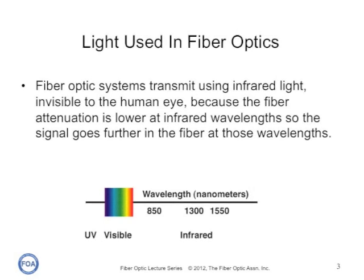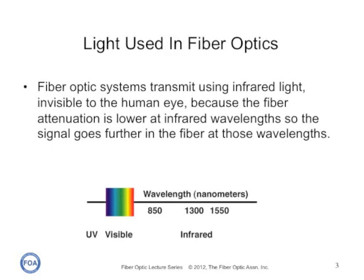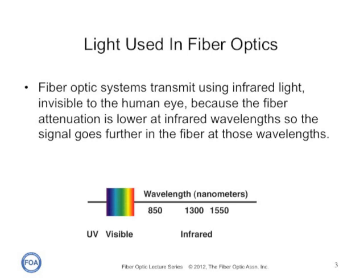The particular wavelengths used in typical fiber optic systems — 850, 1300, and 1550 nanometers — correspond to wavelengths where optical light sources, lasers or LEDs, are easily manufactured.